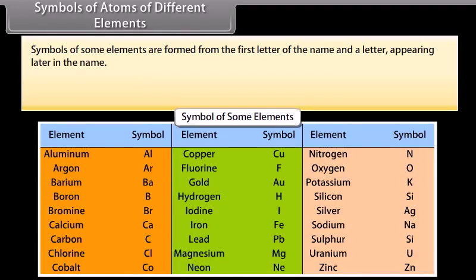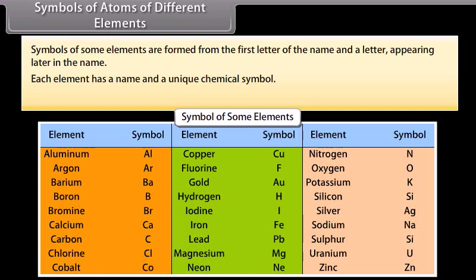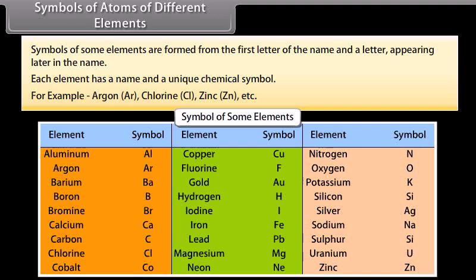Berzelius suggested that the symbols of elements be made from one or two letters of the name of that element. Symbols of some elements are formed from the first letter of the name and the letter appearing later in the name. Each element has a name and a unique chemical symbol. For example, Argon Ar, Chlorine Cl, Zinc Zn, etc.